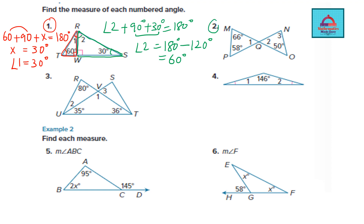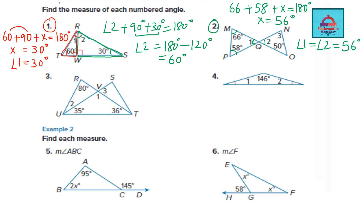In question 2, we have two triangles. In the first triangle, angle M is 66 degrees and angle P is 58 degrees. Taking angle 1 as x: 66 + 58 + x = 180. Adding 66 and 58 gives 124; subtract from 180 to get x = 56 degrees. Angle 1 and angle 2 are vertically opposite angles, so both equal 56 degrees.